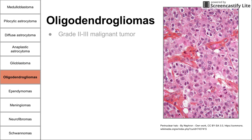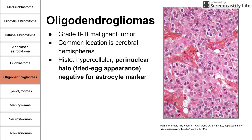Next is oligodendroglioma, which comes from oligodendrocytes. It is grade 2 to 3, and the common location is the cerebral hemispheres. On histology, we see a fried egg appearance — a nucleus surrounded by a perinuclear halo. It's also important to note that these cells stain negative for astrocyte markers, which helps differentiate oligodendrogliomas from astrocyte cancers. Molecularly, there is a 1p19q codeletion, unlike the astrocytomas, which further helps differentiate it.